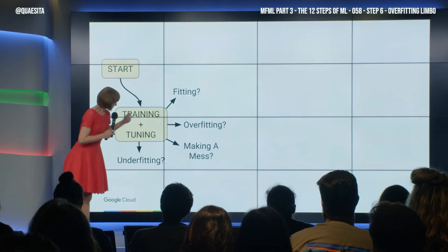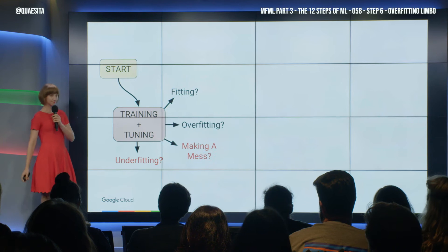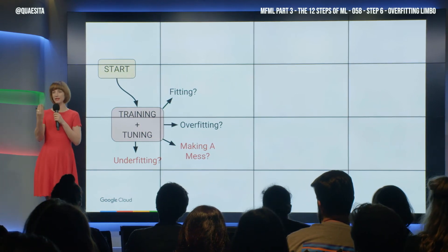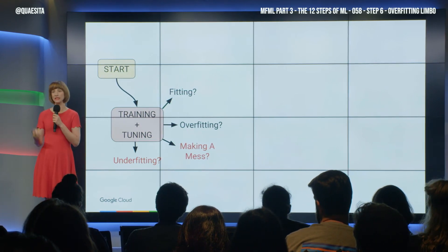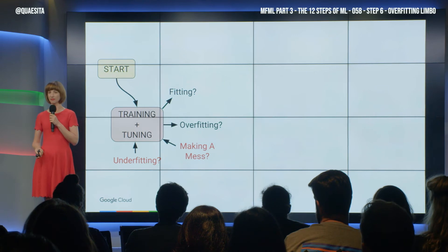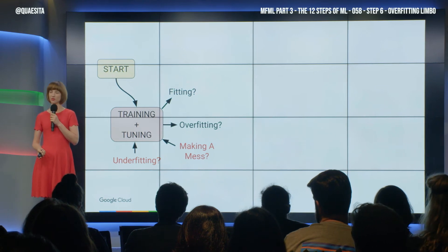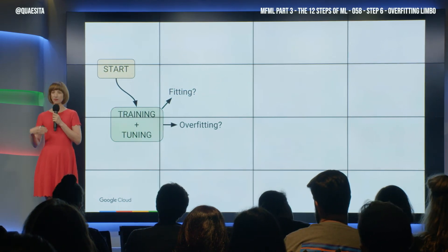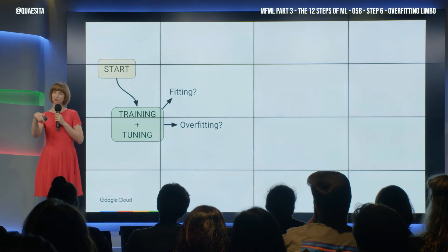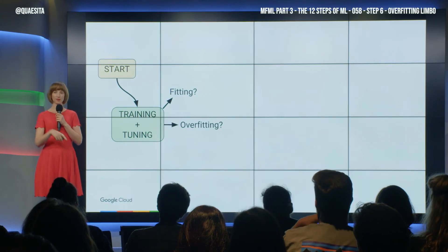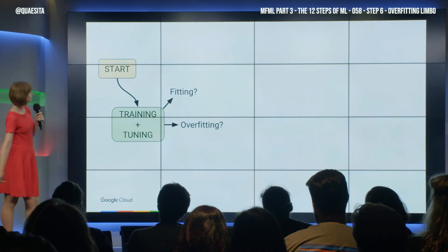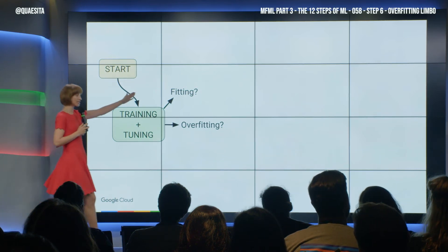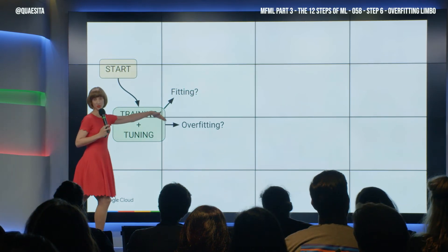If we're making a mess or we are underfitting, we'll be able to discover that fairly quickly in the same data where we did it, and we'll go back to the drawing board and try something else. So, if we're thinking of moving on, we don't have those other two — we have fitting or overfitting. And we can't tell the difference, remember, in training data.